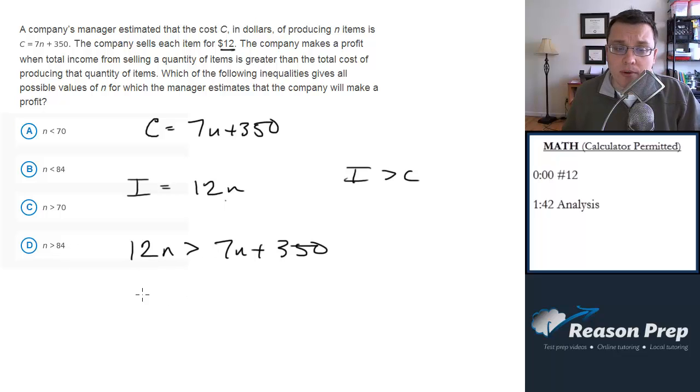So now we've just got to do a little bit of algebra here. Subtract 7n from both sides, we get 5n is greater than 350. Divide both sides by 5, and we get n is greater than 70, and that would be the answer.